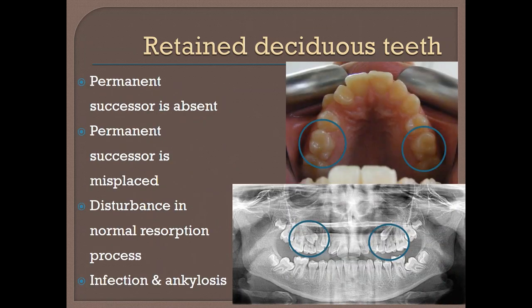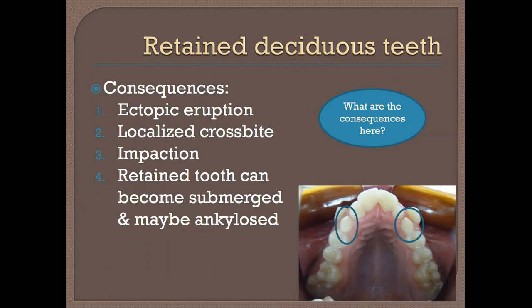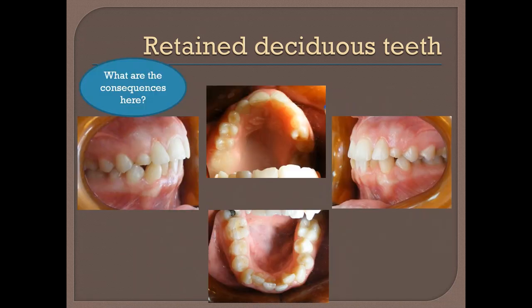Another reason is that infection and ankylosis can cause a deciduous tooth to stay longer than expected. The consequences of a retained deciduous tooth include ectopic eruption of permanent teeth. For example, when deciduous canines are retained, permanent canines may erupt buccally, displaced buccally.